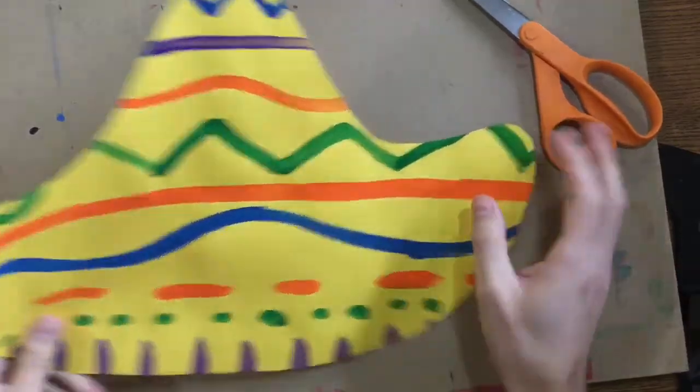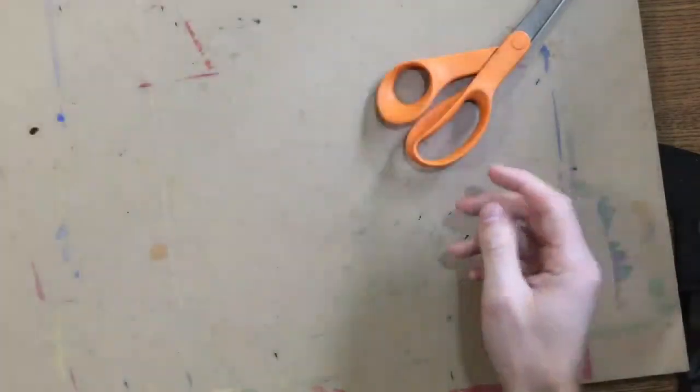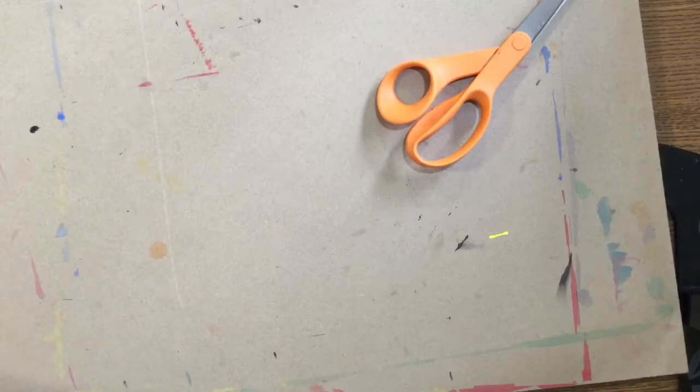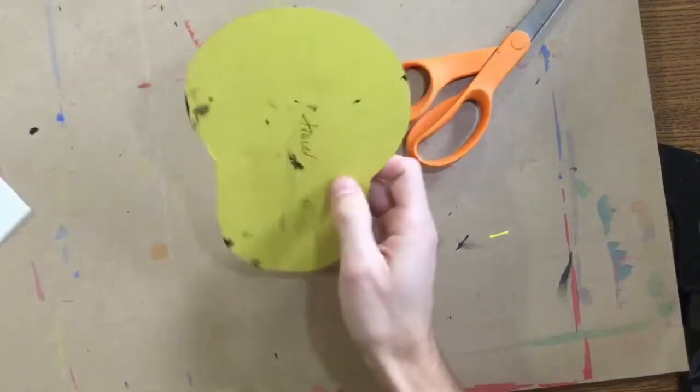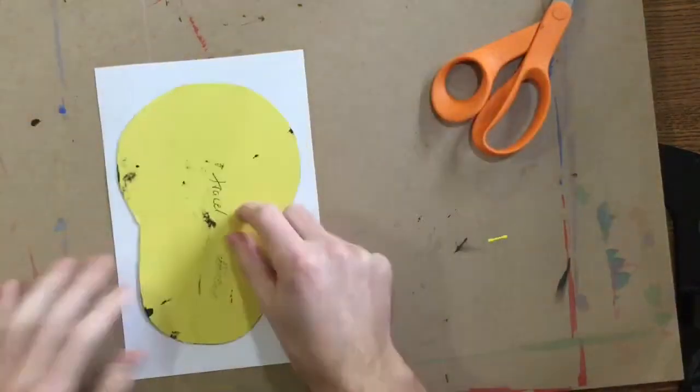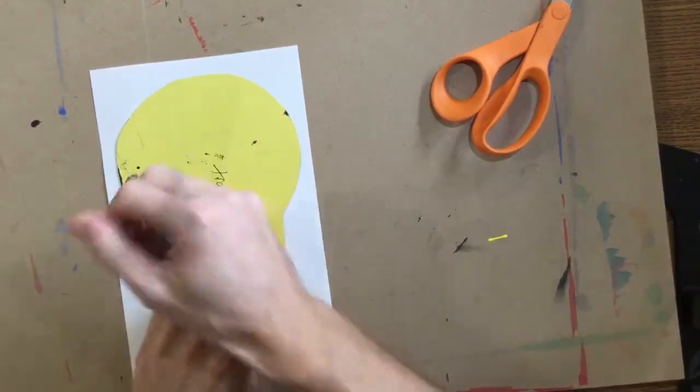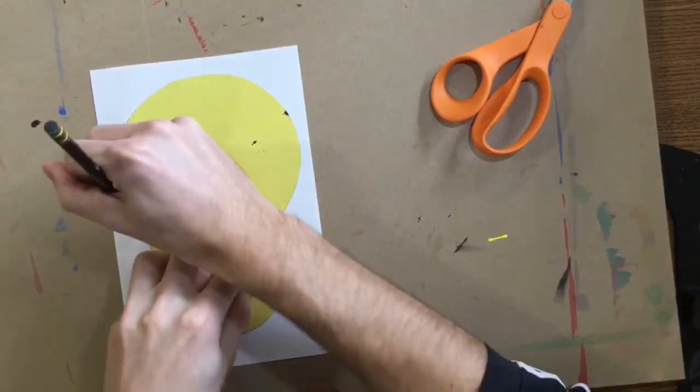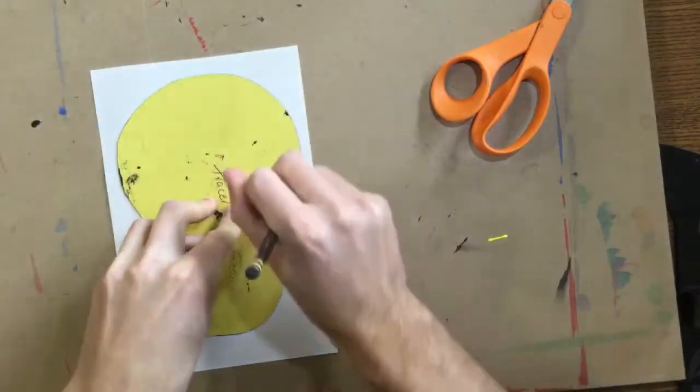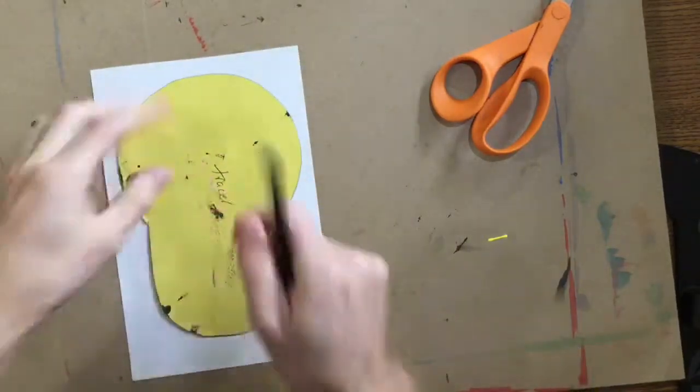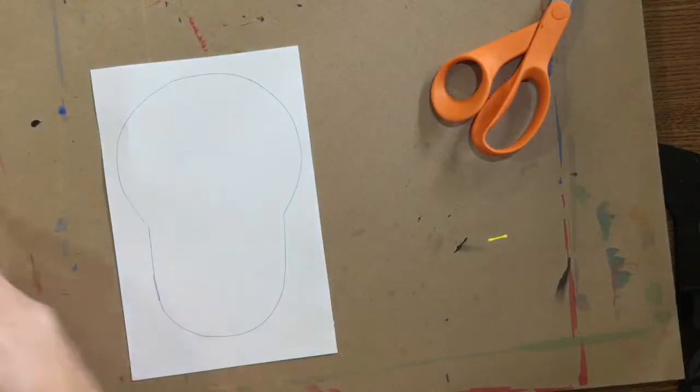We don't need them anymore. I'm actually going to set my sombrero off to the side for a little bit. Next, at your table, I have one of those tracers. You need to carefully trace that skull shape onto your white sheet of paper. Take your time. Ask a friend to hold it for you if you need help. Traced it.